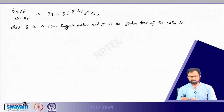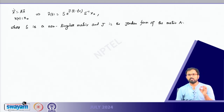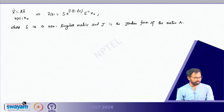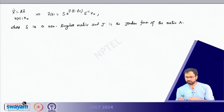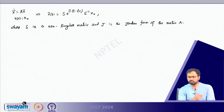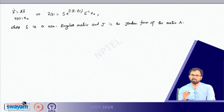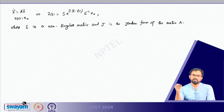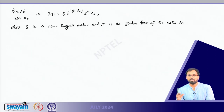If A is a constant matrix — constant in the sense that the coefficients are not periodic — then we can write the solution x(t) as S e^{J(t - t_0)} S^{-1} x_0. This comes from writing the solution using variation of parameters: you integrate both sides and obtain x(t) equals x_0 plus the integral from t_0 to t of A and so on, and from there we arrive at this expression.